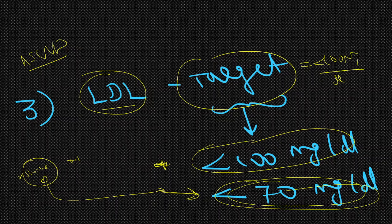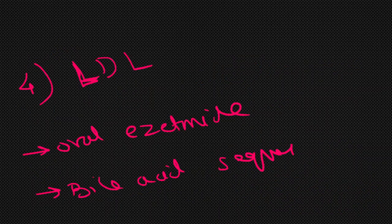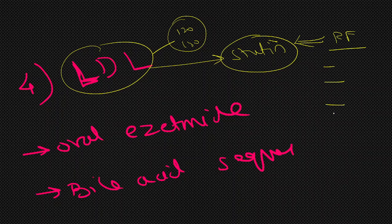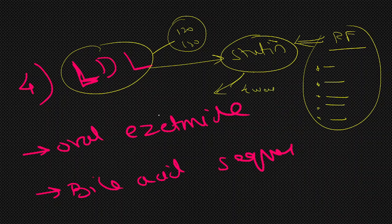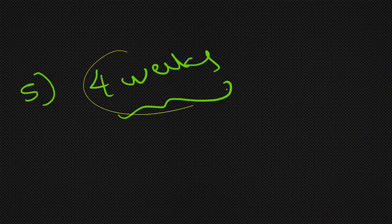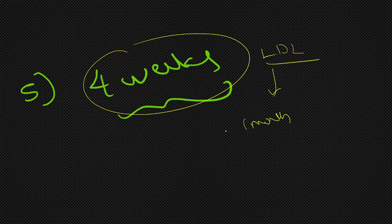Clinical Point 4: Whenever LDL is high — say 120 or 160, more than 100 — first treat the risk factors: obesity, lifestyle changes, diet, smoking, and alcohol. After four weeks, if the value is still high, the patient is started on a statin — high dose or low dose depending on the case. After starting the statin, if after four weeks the values are still high, another drug is added. After a further four weeks, if still high, a bile acid sequestrant may be required. Clinical Point 5: Repeat the LDL level after starting the drug — ideally after four weeks — to look for the response.